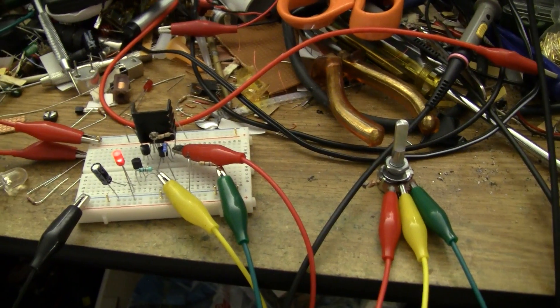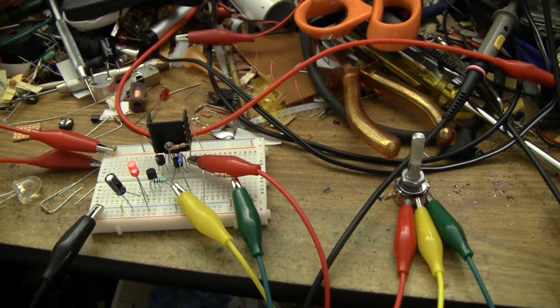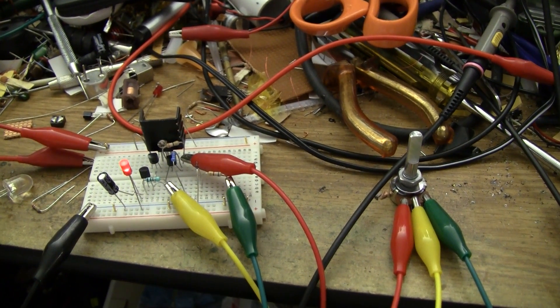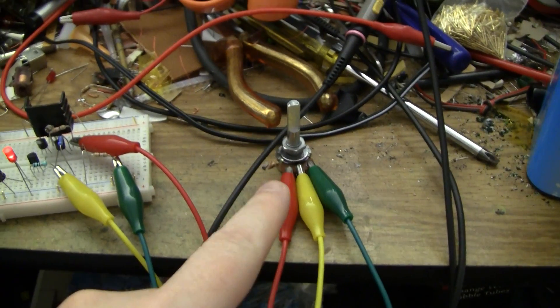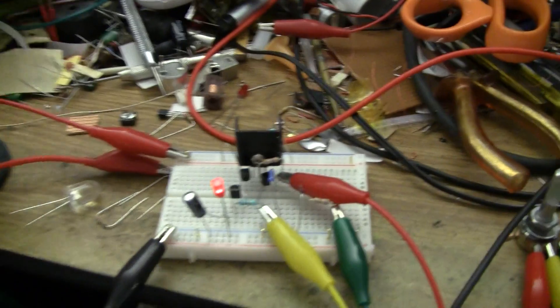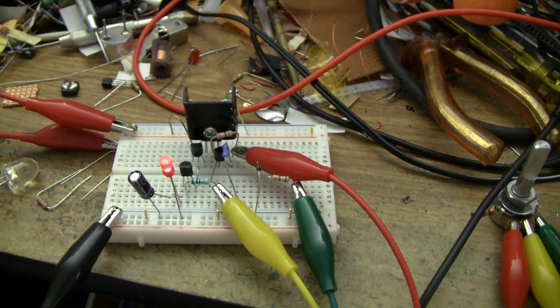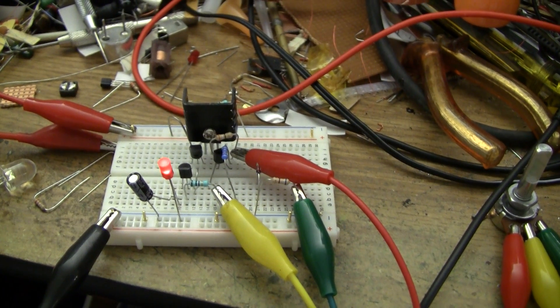Forgive me, it's currently sitting on a solderless breadboard. I'll probably build it on a piece of perfboard or maybe into a little box. Over here's the pot that varies the voltage. It's just a 5k linear pot. You can see I've got a small heatsink on the BD-139.